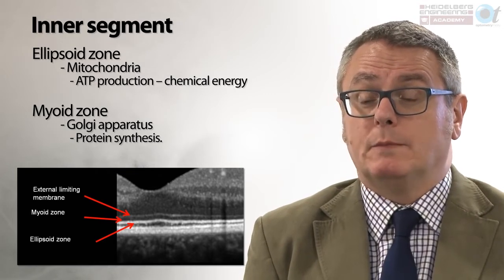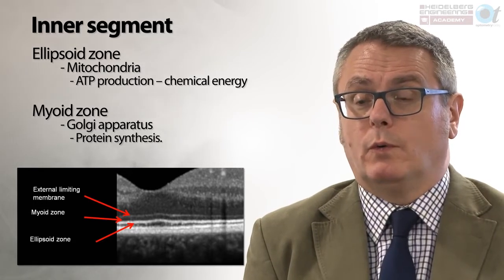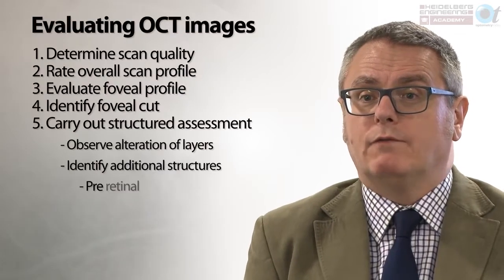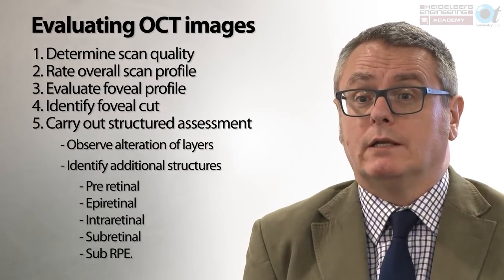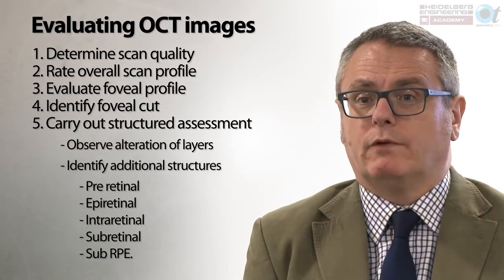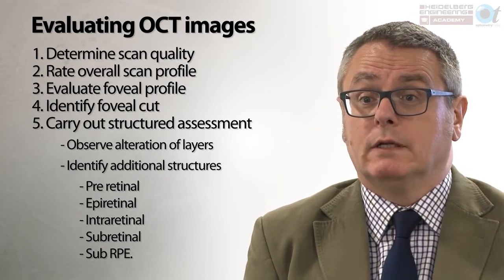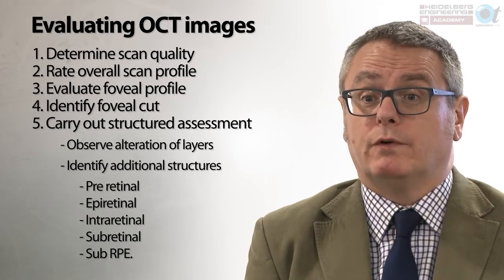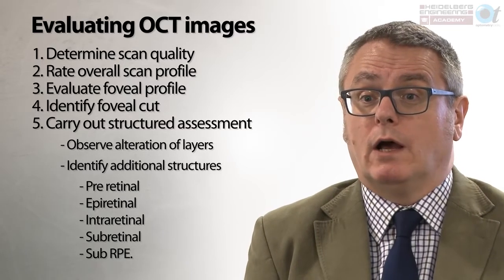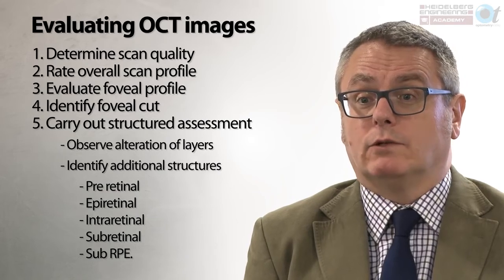Disruption of the external limiting membrane can also significantly impact the patient's vision, so it is always important to comment on those structures. When evaluating OCT images, it's important to follow a consistent, repeatable five-point process: look at the scan quality, rate the overall appearance of the scan, evaluate the foveal profile, identify whether or not the fovea has been assessed within the scans, and then carry out a structured assessment commenting on alterations to normal retinal layers and identifying additional retinal structures.